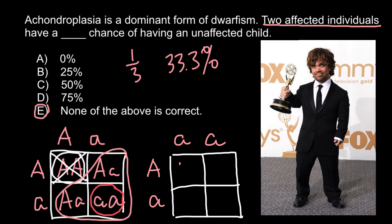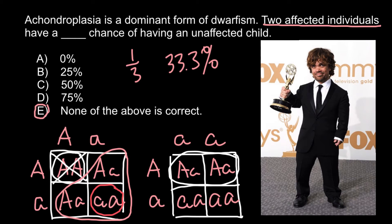In the Punnett square we get: capital A small a, capital A small a, small a small a, and small a small a. As you can see, there is a 50% chance that their progeny would be phenotypically and genotypically normal.